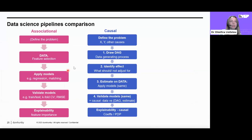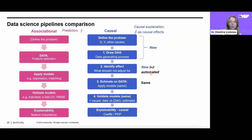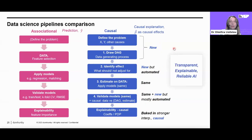To summarize the pipeline: drawing the causal DAG and running identification are the key new steps needed to make causal claims. Identification is automated in the packages, so it shouldn't take much more time. Estimation is the same as in the traditional pipeline. Validation is largely the same with some new automated additions. Explainability comes baked in as a stronger, causal form. With causal methods we achieve transparent AI — the DAG is a transparent representation of all underlying assumptions — plus explainability through causal explanations, and reliable, robust results.